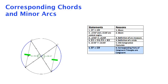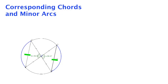So yes, we can prove that the converse is also true. That if we know that the minor arcs are congruent, then the chords must be congruent, too.